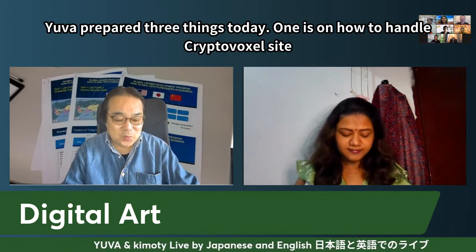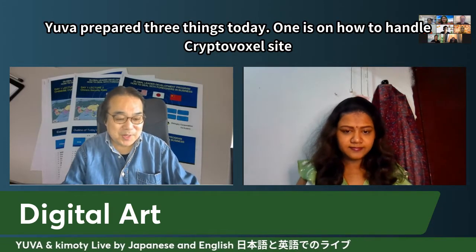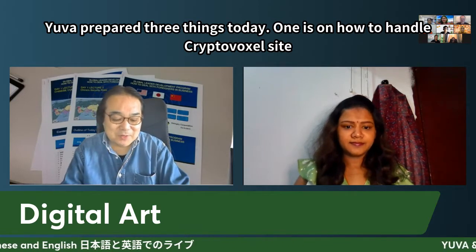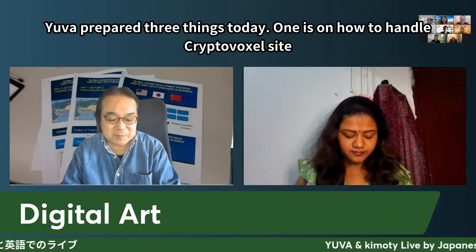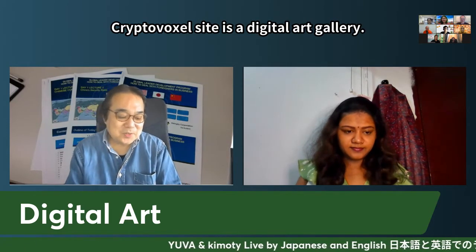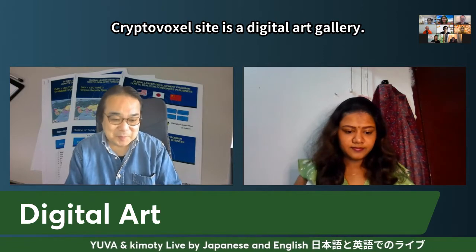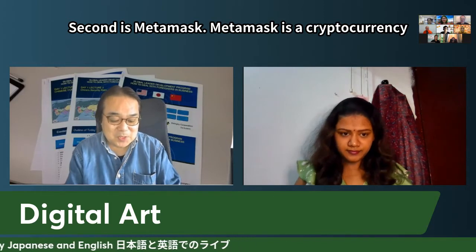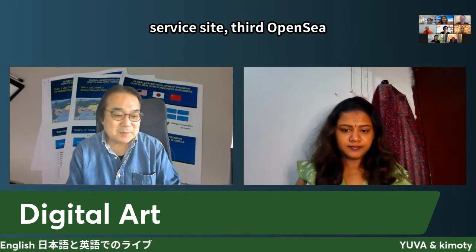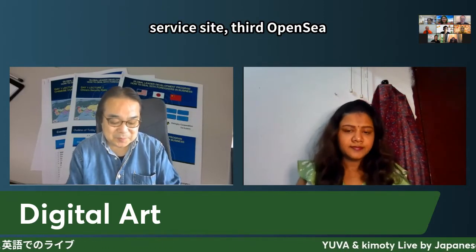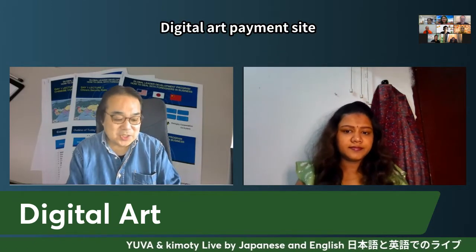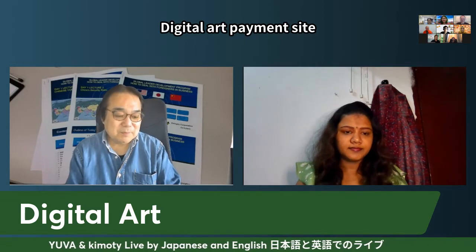Today we have prepared three items. One item is how to handle CryptoVoxel sites. CryptoVoxel site is a digital art gallery. Second, MetaMask — MetaMask is a cryptocurrency service site. Third, OpenSea — OpenSea is a digital art payment site.